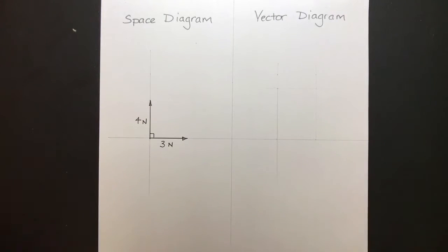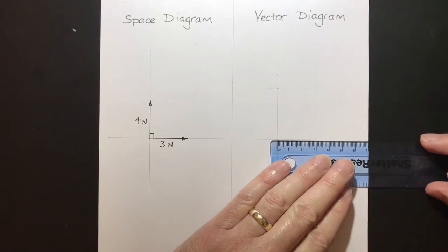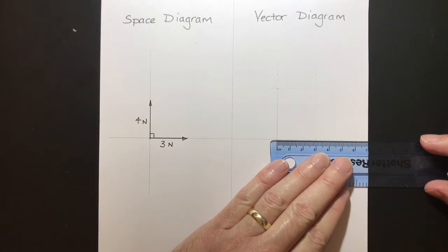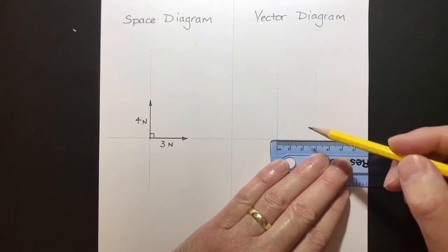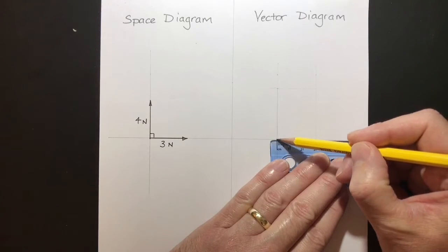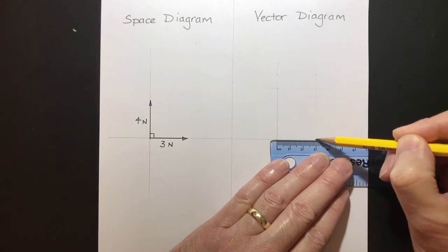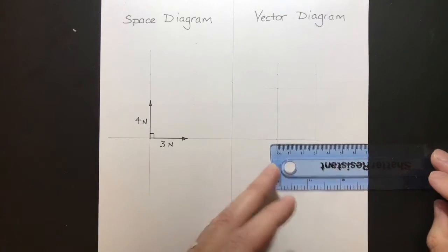So let's start. I've already got my horizontal line in, so I'm just going to very faintly mark off our 3 Newtons. And I can use a scale of 1 Newton to 1 centimeter here. Here we go. 1, 2, 3 Newtons there.